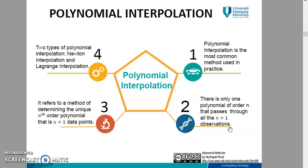But for a quadratic polynomial, there are three data points connected. Polynomial interpolation refers to a method of determining the unique order of polynomials that fits N plus 1 data points.